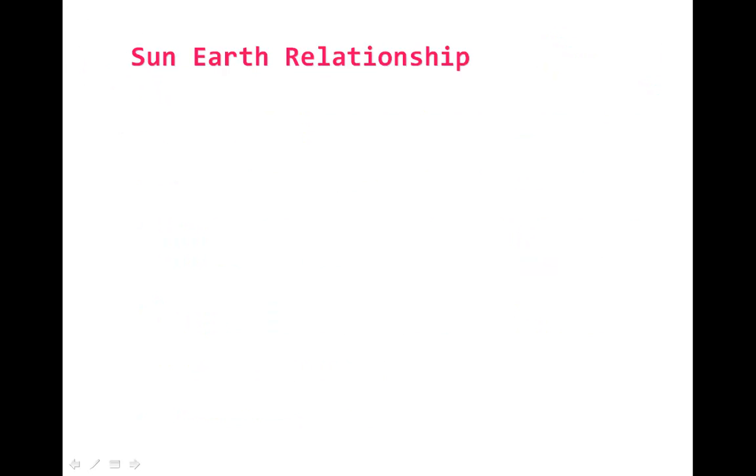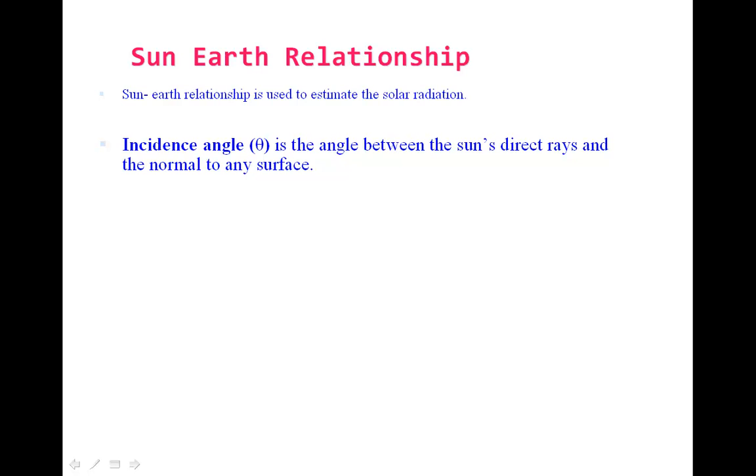Sun-Earth relationship - sun-earth relationship or solar geometry is used to establish the solar radiation or to estimate or predict the solar radiation falling on horizontal or tilted surfaces. To collect maximum solar energy by solar collector, it should be oriented towards the sun.